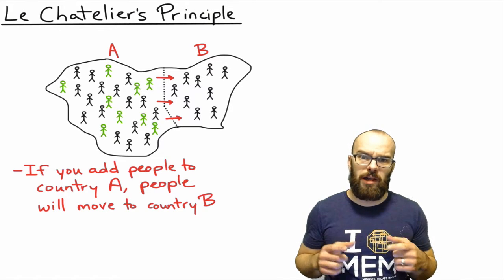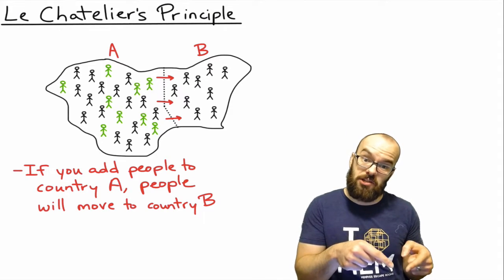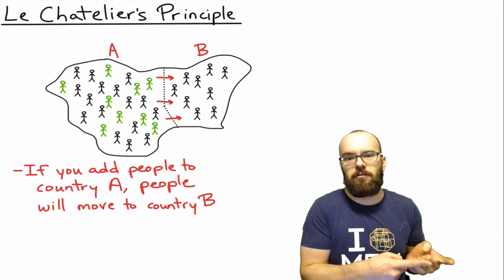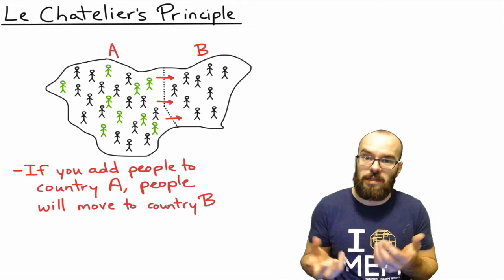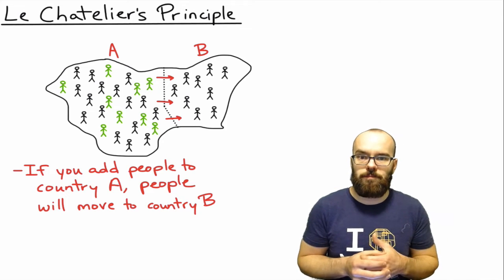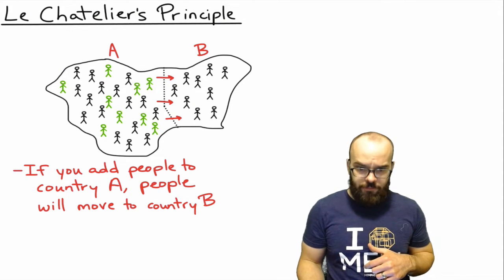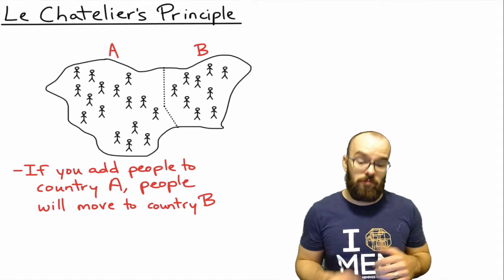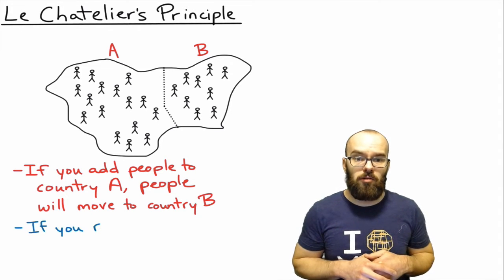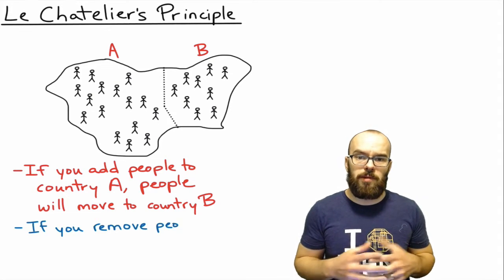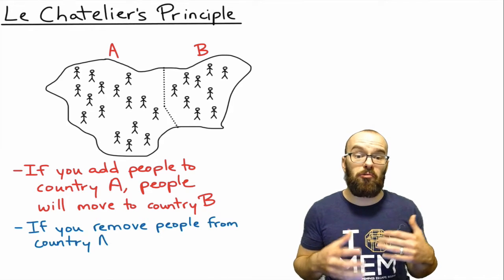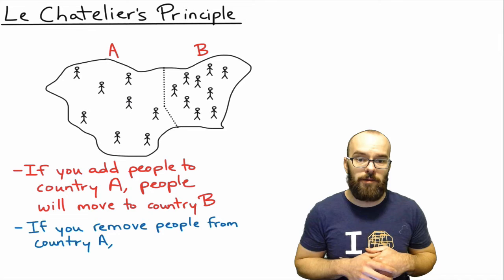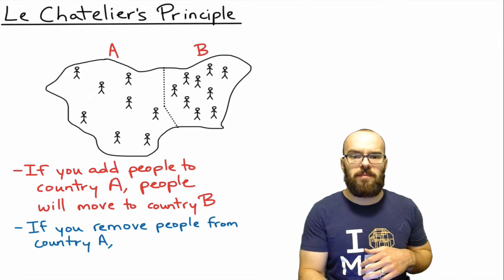In a similar way, when we add concentration of a reactant — let's say A is a reactant — that's going to shift the reaction toward the products. Now what if we do the opposite? Let's go back and say we remove people from Country A. There's now a lot more room in Country A than there used to be.